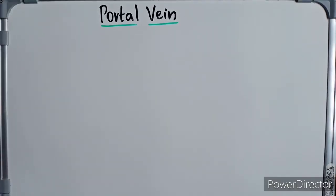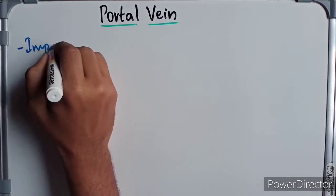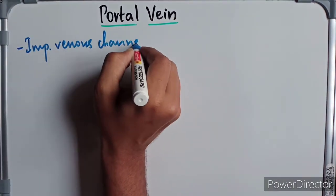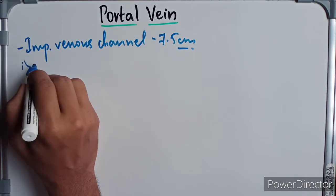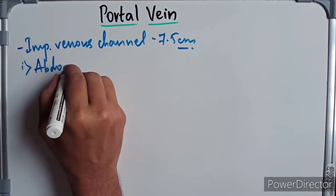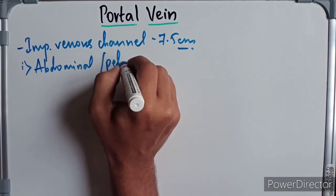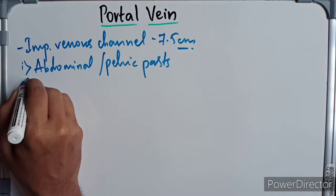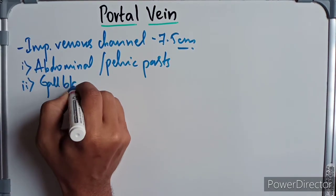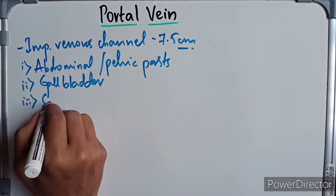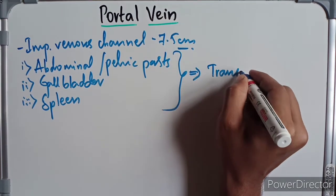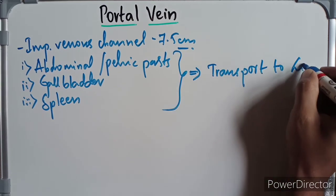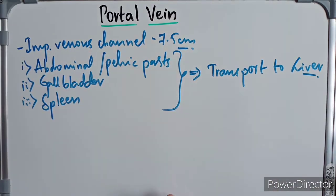Welcome. In this video we're going to discuss the anatomy of the portal vein. The portal vein is an important venous channel, about seven point five centimeters in length. It collects blood from the abdominal and pelvic parts of the alimentary tract, as well as from the gallbladder and spleen, and transports all this blood to the liver.